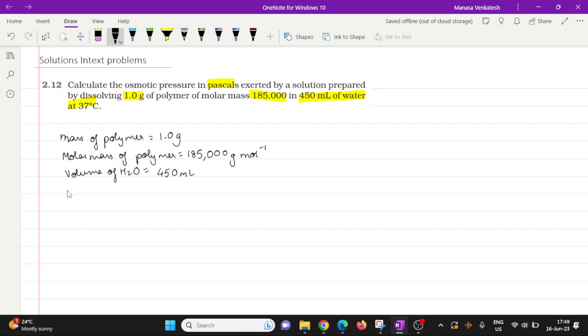We've also been given temperature is equal to 37 degrees Celsius, so that will be 37 plus 273.15, that will give us the value in Kelvin, so 310.15 Kelvin.